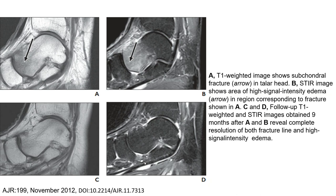Images C and D are follow-up T1-weighted and STIR images obtained after management following A and B, revealing complete resolution of both the fracture line and the high signal intensity bone marrow edema.